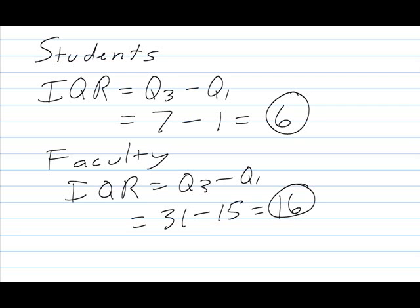And notice with the faculty data there is an extreme value. There is an extreme value of 73. That is one major weakness of the range as it is very sensitive to those extreme values.